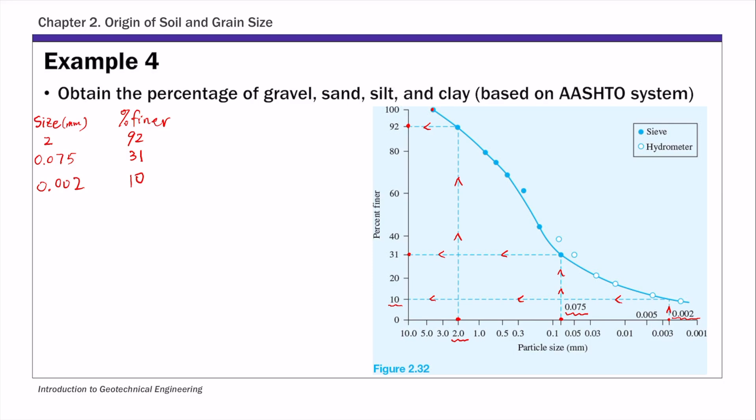And then for gravel, so the percent of gravel, remember gravel is anything larger than 2 mm and of course smaller than 76.2. So for this value, gravel is 100% minus 92%. So 92 is percent finer than 2 mm. So what's left is the percent larger than 2 mm.